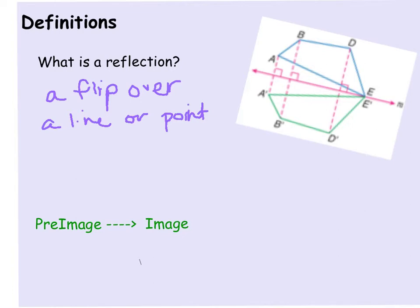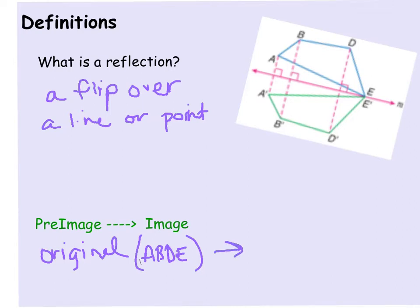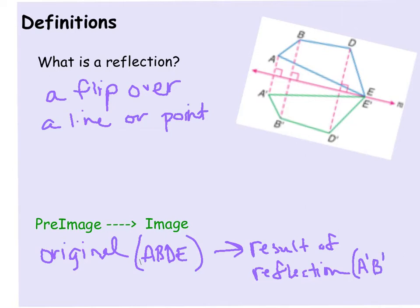The other thing we have here is pre-image and image. The pre-image is the original — so for this that would be A, B, D, E. And the image is the result of doing the reflection. You'll notice that we label that with what we call prime, so it would be A prime, B prime, D prime, and E prime.